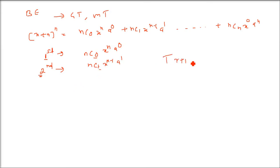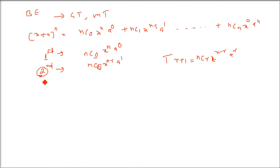So for any T(r+1), the general term is nCr · x^(n-r) · a^r. You can verify: if r=1, then it is the 2nd term (r+1=2), which matches nC1 · x^(n-1) · a^1. This T(r+1) = nCr · x^(n-r) · a^r is the general term.